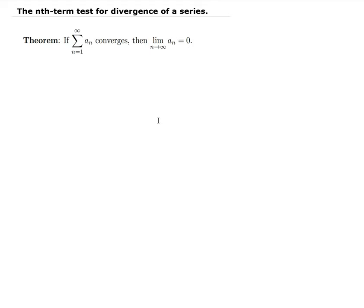Think of this as a P implies Q statement. The series converging is your P value, and the limit part is your Q value. So this is nothing more than the form of P implies Q, and this is what we call a direct statement.